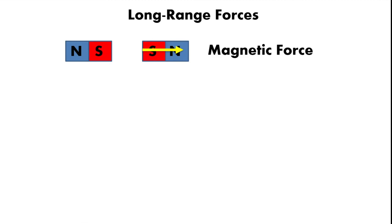A force can be either a push or a pull. In this magnetic case, it's a push. According to the third law, magnet 2 is also exerting an equal but opposite force back on magnet 1. The force of magnet 1 on magnet 2 is equal in magnitude but opposite in direction to the force of magnet 2 on magnet 1.